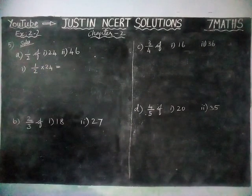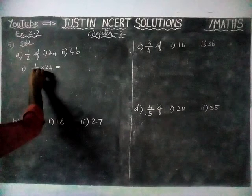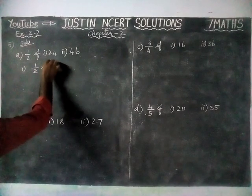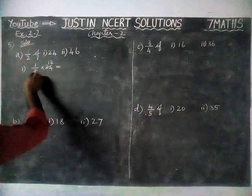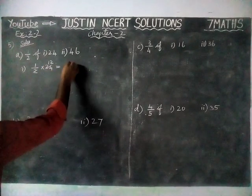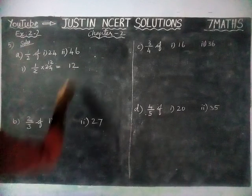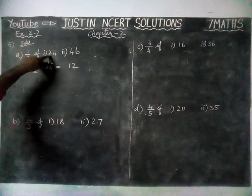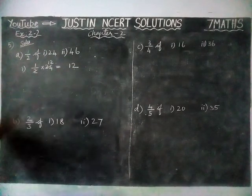If possible, we can simplify it. 2 goes into 24 twelve times, so 1 into 12 is equal to 12. So, 1 by 2 of 24 is equal to 12.